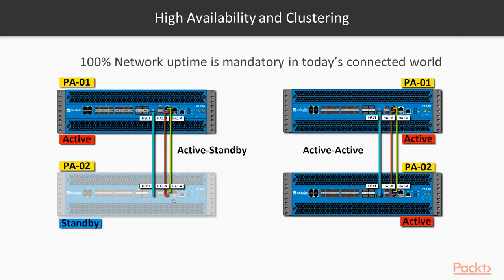The dedicated HA interfaces transmit heartbeat information, so both units keep sending hellos to each other to confirm they're alive and maintain the active-standby HA status. The standby unit won't forward any traffic — you can still reach it via the dedicated management interface — but it's standing by, ready to take over ownership of traffic forwarding if the active primary goes down.